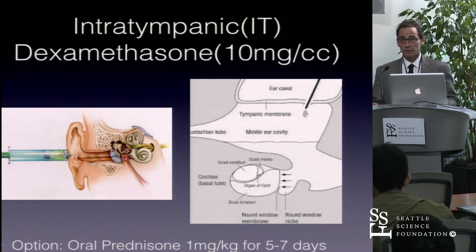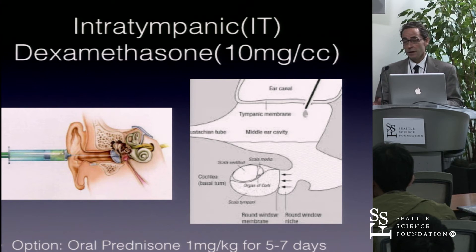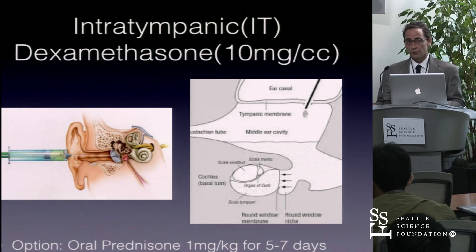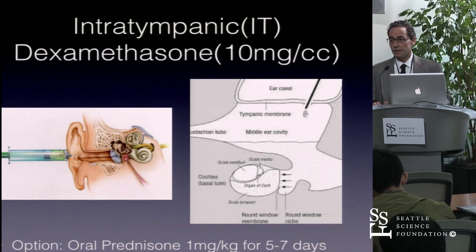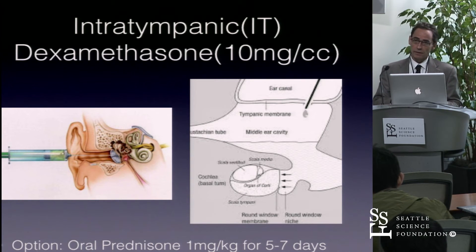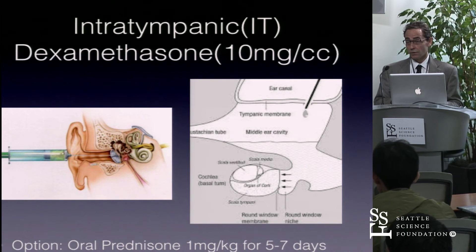For intratympanic dexamethasone, I use straight dexamethasone at 10 milligrams per cc and inject one cc into the middle ear. I numb the eardrum in the posterior inferior quadrant with phenol and make two small pinholes with a 25-gauge needle and inject one cc. I then turn them to the opposite lateral decubitus position and leave them there for 30 minutes. For oral prednisone, I treat patients with one milligram per kilogram orally in the morning for five to seven days.